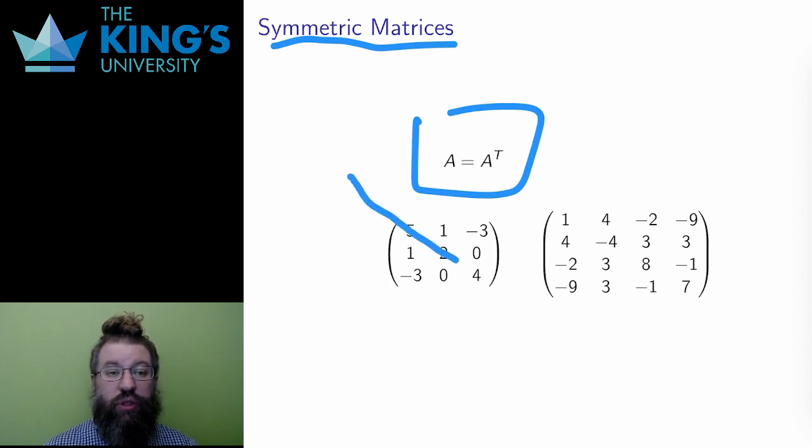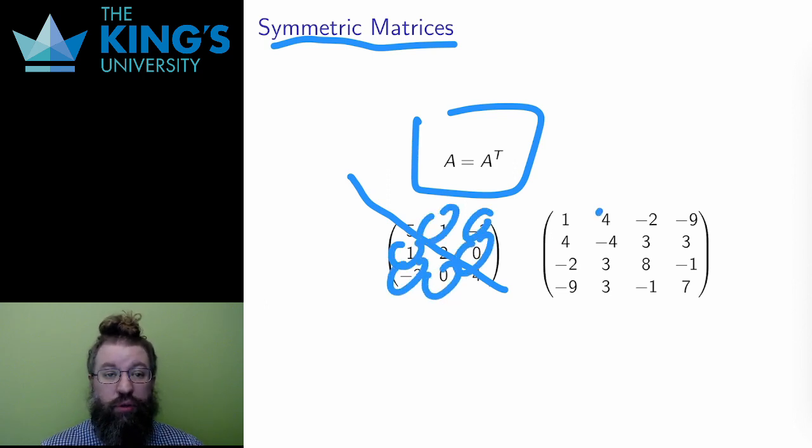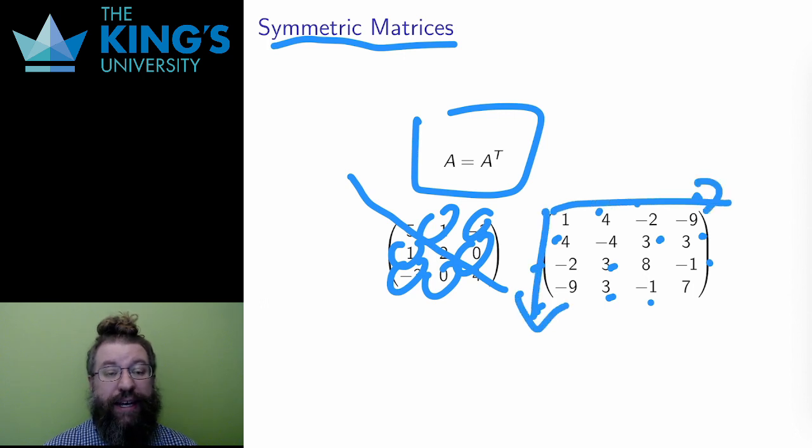You can see the diagonal symmetry. The 1, negative 3, and 0 are matched here. And in the larger matrix, 4, negative 2, negative 9, 3, 3, negative 1 are all matched across the diagonal. And you can also see that the rows and the columns are exactly the same lists of numbers. And that's what a symmetric matrix is.